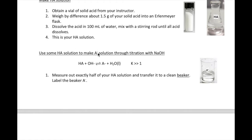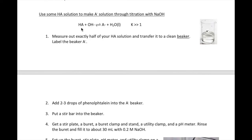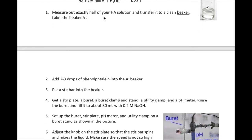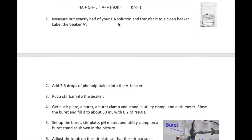The next part is to make a solution of your conjugate base, or A-. You will do this by titrating your weak acid solution with NaOH. Note that a reaction between HA, your weak acid, and OH- yields A- and water. Since the K for this reaction is much larger than 1, this reaction goes to completion. So to make your A-, we will need to titrate the HA with OH- to the equivalence point. First, measure out exactly half of your HA solution using a graduated cylinder — that is 50 milliliters. Transfer that into a beaker and label it A-.